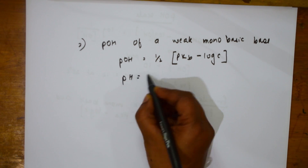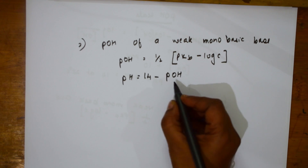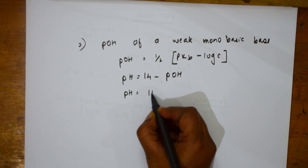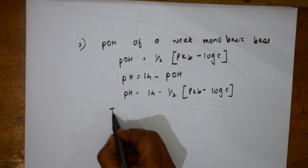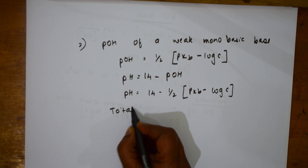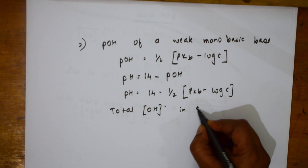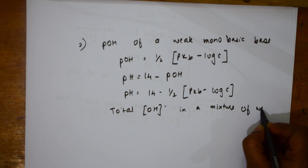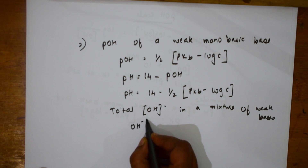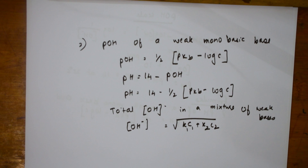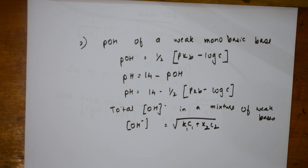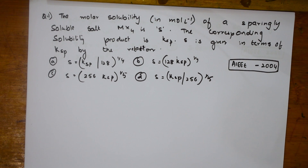pH equals 14 minus pOH. Substituting: pH equals 14 minus half times pKb minus log C, which gives 15 minus half pKb minus log C. The total OH minus in a mixture of weak bases uses the formula: root of K1C1 plus K1C1 times K2C2 raised appropriately. With these basic formulas for solubility product, pH and pOH, let us start doing numericals from your question papers.